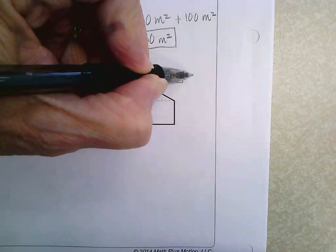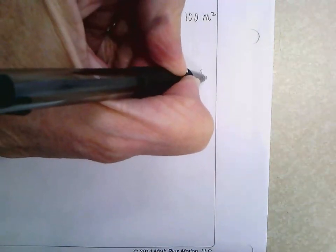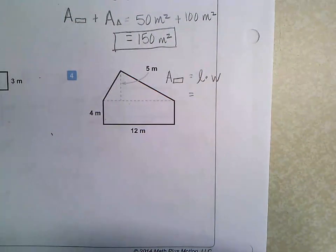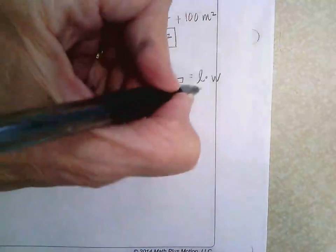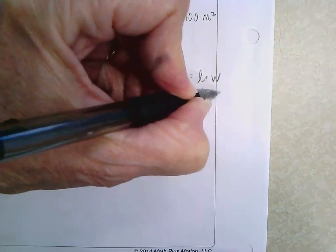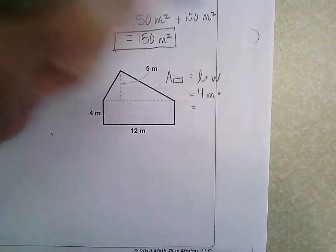So let me just first write down what I need to write down. Oh gosh, there's no room to write anything. Okay, area equals length times width, and then that would be 4 meters times 12 meters,